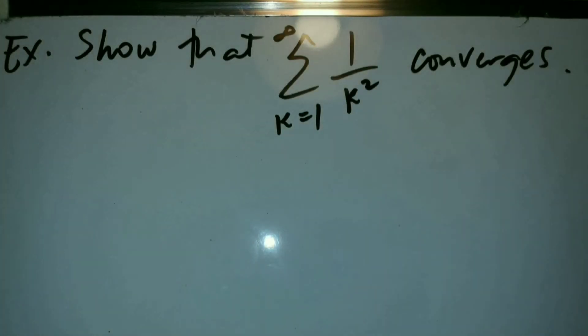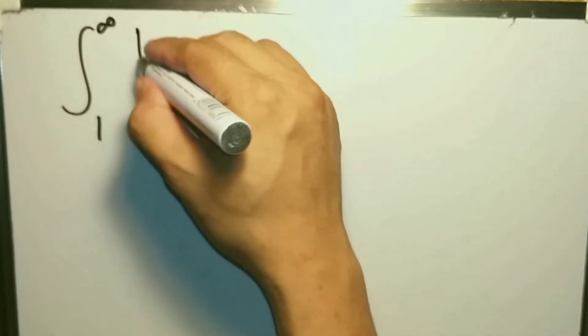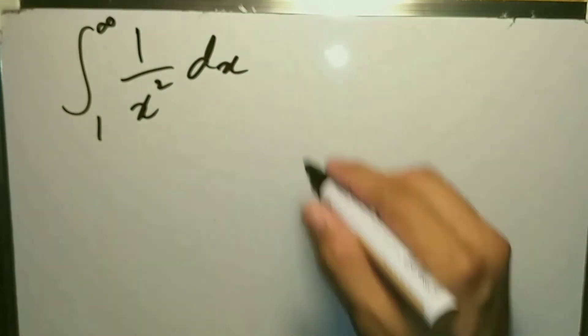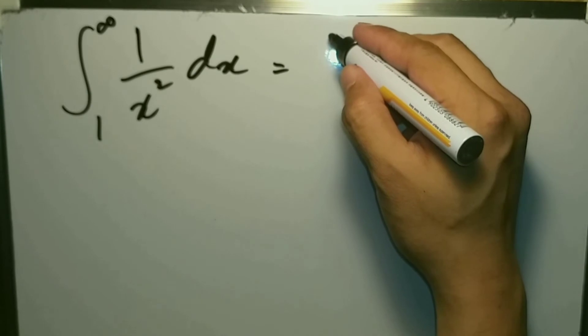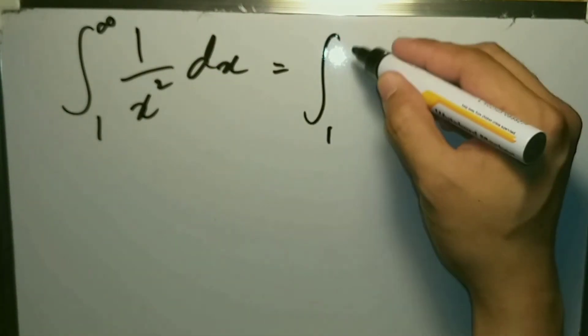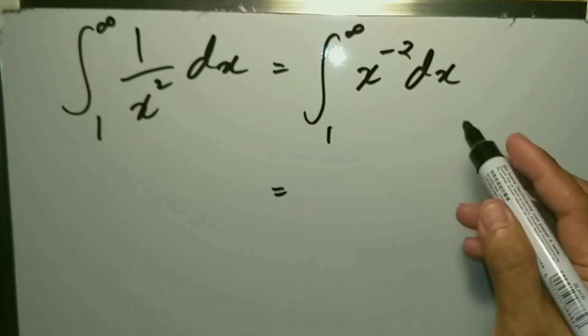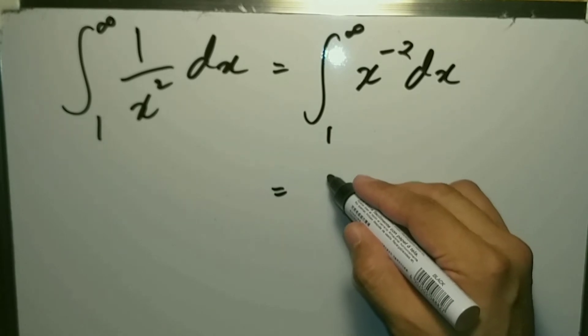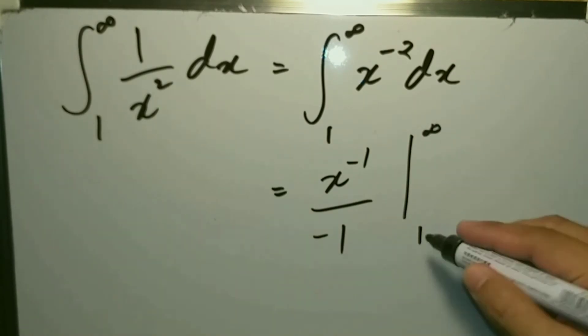For example, show that the series summation of 1/k² converges. To show convergence, we evaluate the integral. We can write 1/x² as x^(−2) dx, and then we get x^(−1) / (−1), evaluated from 1 to infinity.